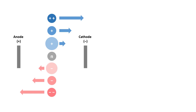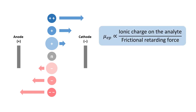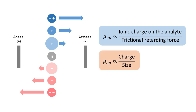In summary, the electrophoretic mobility is directly proportional to the ionic charge on the analyte and inversely proportional to the frictional retarding factors such as the size and shape of the analytes, as well as the viscosity of the medium. This simply means that the electrophoretic mobility is directly proportional to the charge-to-size ratio of the analytes.